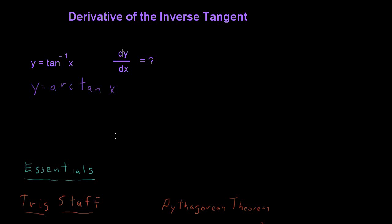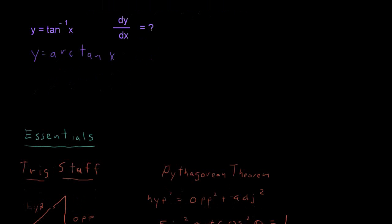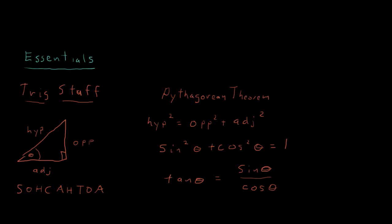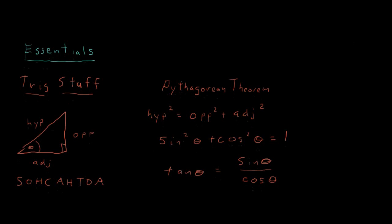We're going to find the derivative. What are the bare essentials we need? First, some trig: we need right triangle trigonometry — SOHCAHTOA. We need the Pythagorean theorem; in our case, the hypotenuse squared equals the opposite side squared plus the adjacent side squared. Sine squared plus cosine squared equals 1 is important, and the tangent of theta equals sine theta over cosine theta.